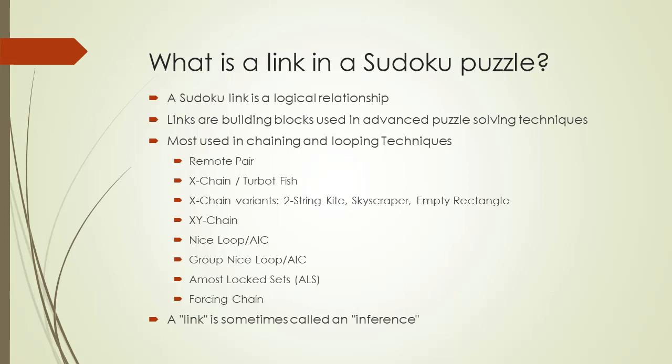A Sudoku link is a logical relationship between two elements within a Sudoku puzzle. Elements include possible candidates between two different cells or possible candidates within the same cell. Links are building blocks used in advanced puzzle solving techniques. A group of links are used together to come to a conclusion — some candidates need to be removed or a cell has a certain value. Links are most commonly used in chaining and looping techniques.